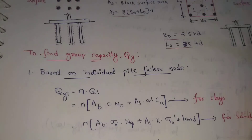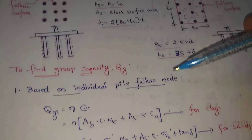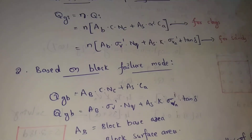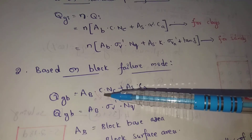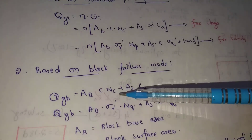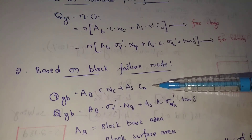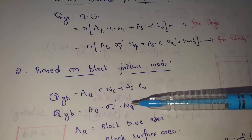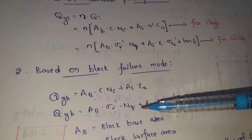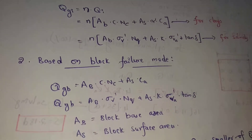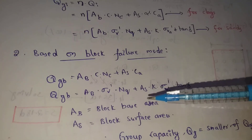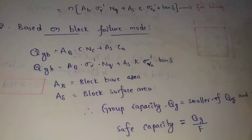Based on block failure mode, some small changes apply compared to individual failure. Here Qgb equals Ab into c into Nc (for clays), where Ab now means block base area. For sands, same formula with Ab as block base area. As (block surface area) replaces the surface area of individual pile. So Ab and As are the two changes for block failure mode.